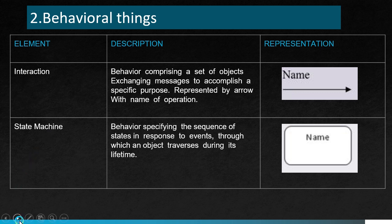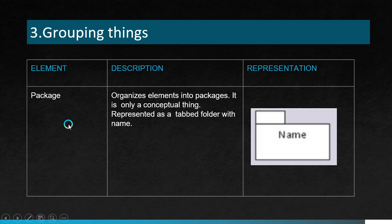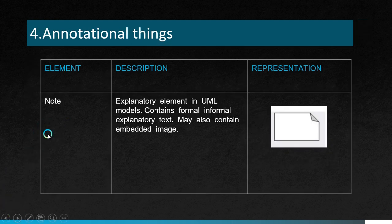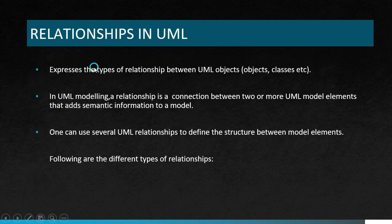Under grouping things, the element is package — it organizes elements into packages. It is only a conceptual thing, represented as a tab folder with a name. Under annotation things, the element is note — an explanatory element in a UML model that contains formal or informal explanatory text or an embedded image.